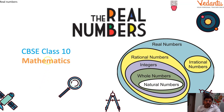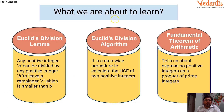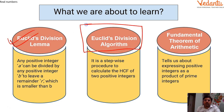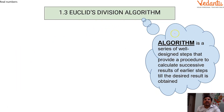Real numbers is a very important chapter — most students find it a little bit boring. Today we are going to do Euclid's division algorithm. In the previous session I saw many comments and chats asking: what is the difference between a lemma and an algorithm? So let's see — basically, an algorithm is a series of well-designed steps that provide a procedure to calculate successive results until the desired result is obtained.